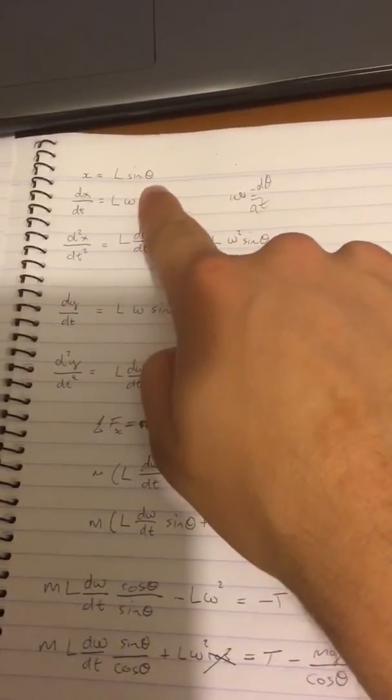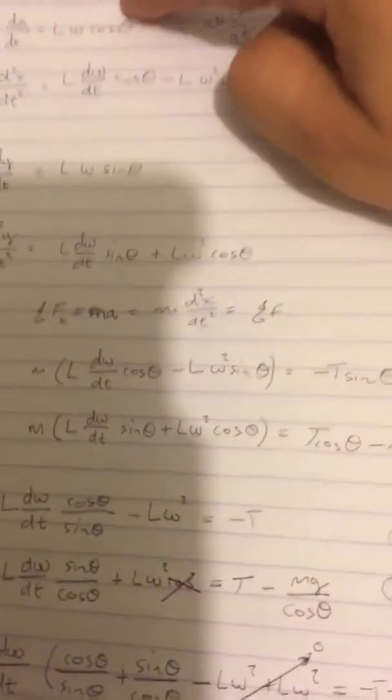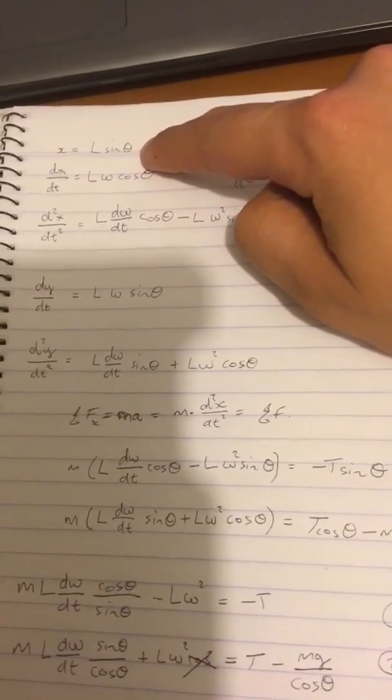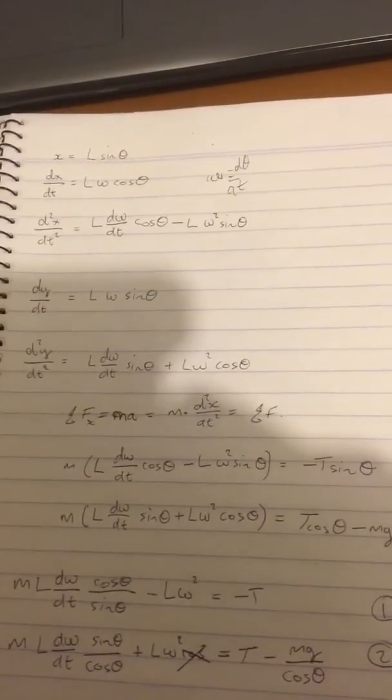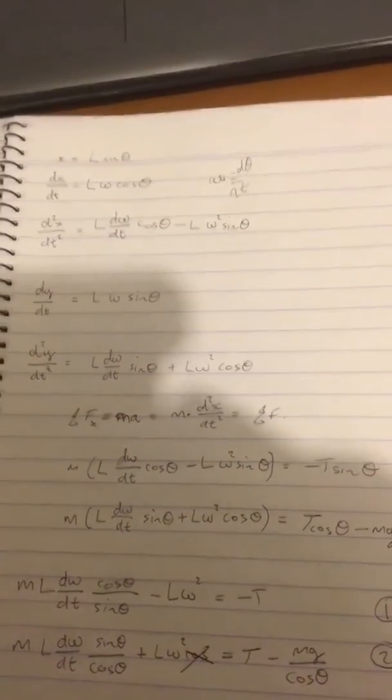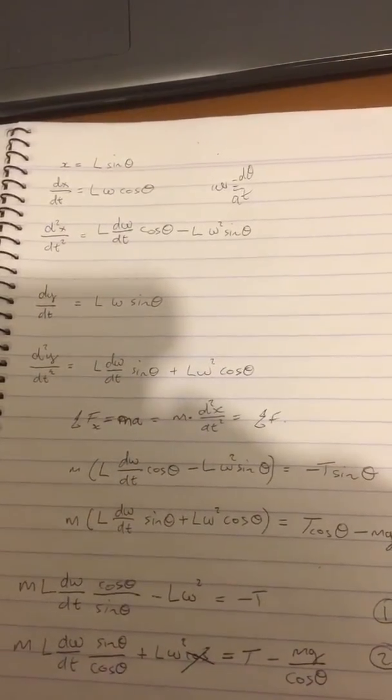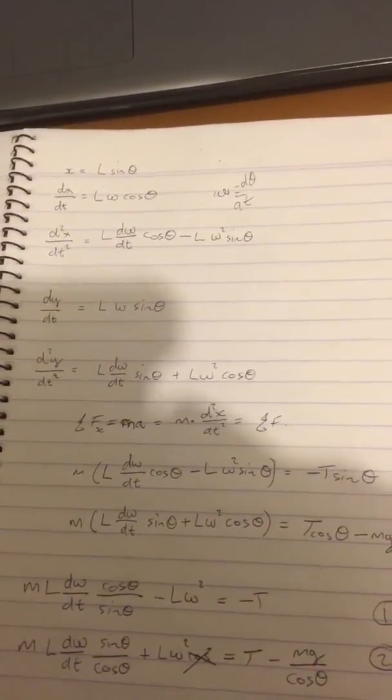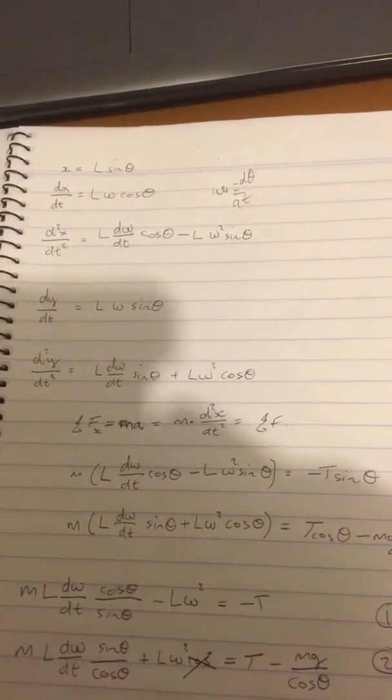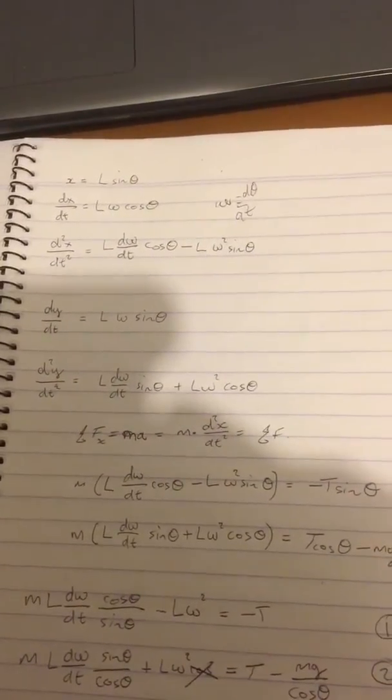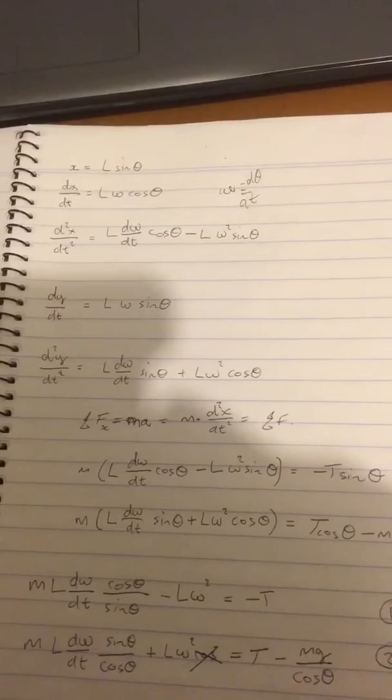Definition of x: x is L sine theta. It's just a geometric feature. Then you take the differential with respect to time, so dx/dt equals L d theta over dt cosine theta, where omega is now d theta dt. You could write it out as L d theta dt cosine theta, it wouldn't make a difference.